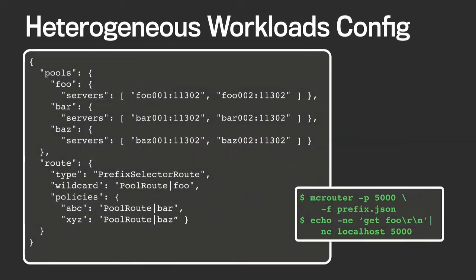Here's how you would set it up. We now have three different pools with two servers in each. When you specify more than one server per pool, MacRouter will automatically use consistent hashing within each pool, so you can easily add or remove servers as necessary. The route we use this time is the prefix selector route, where we define the prefixes for ABC and XYZ keys as well as the wildcard prefix.